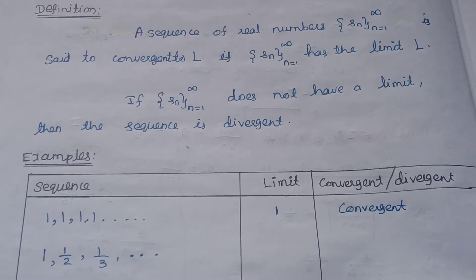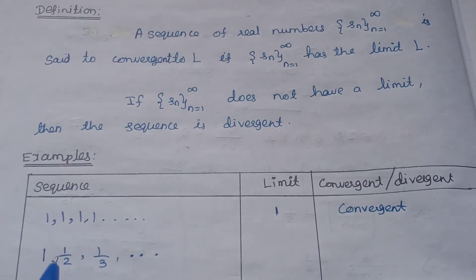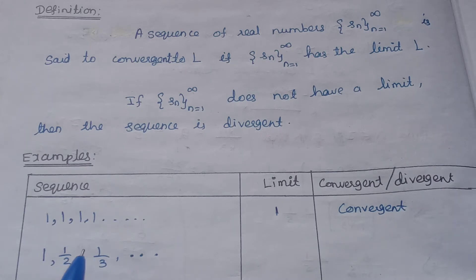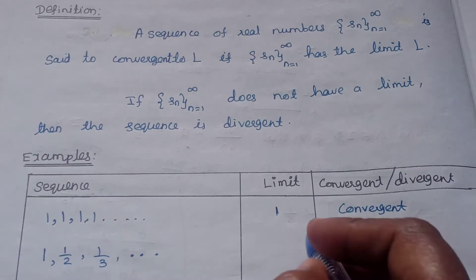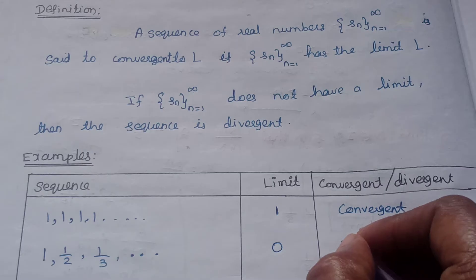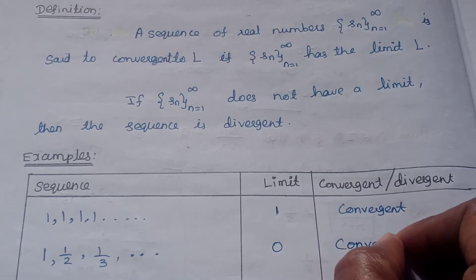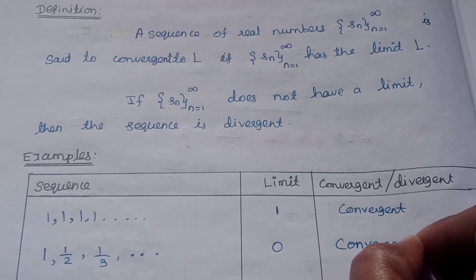Let's look at the sequence 1, 1/2, 1/3, and so on. This is generally 1/n. As n tends to infinity, 1/n tends to 0. As n increases, 1/n decreases and approaches 0. The limit of the sequence is 0. Since the limit exists, we say this is a convergent sequence.